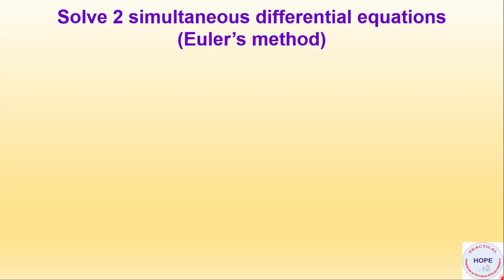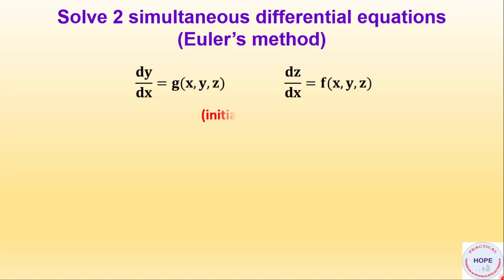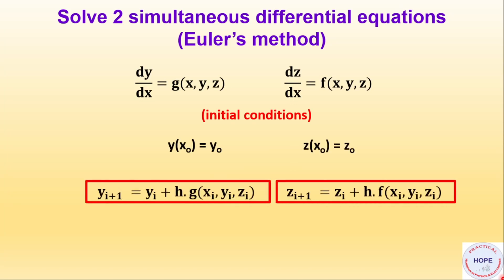We can also solve two simultaneous differential equations using Euler's method with given initial conditions, calculating y(i+1) and z(i+1). This case is similar to reducing a second-order ODE to two simultaneous first-order equations, so we will not repeat it here.